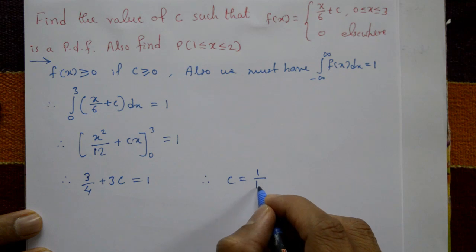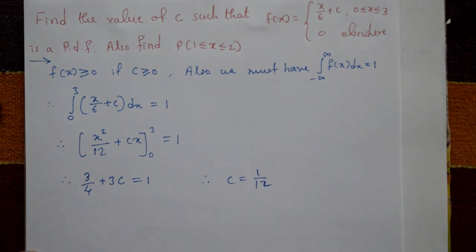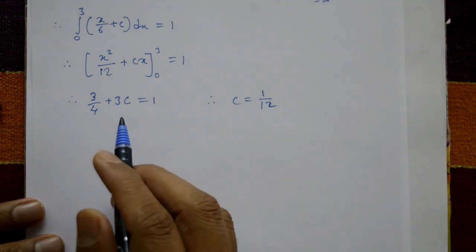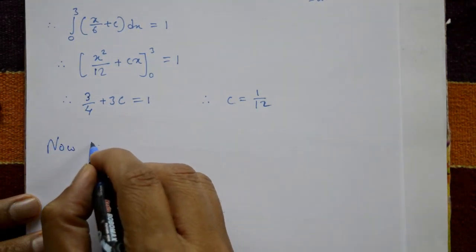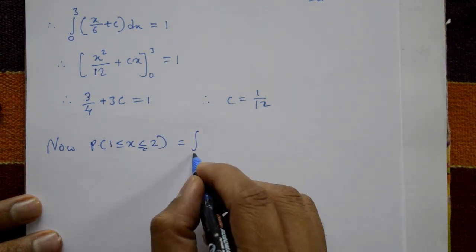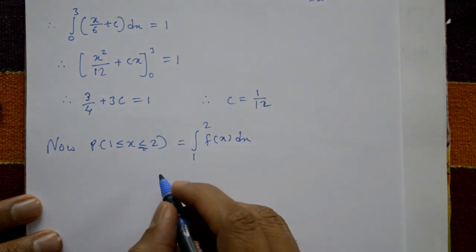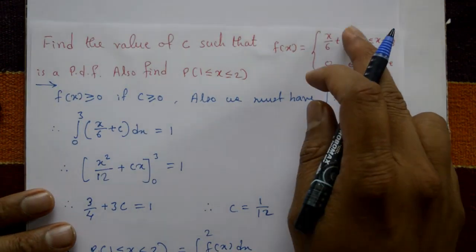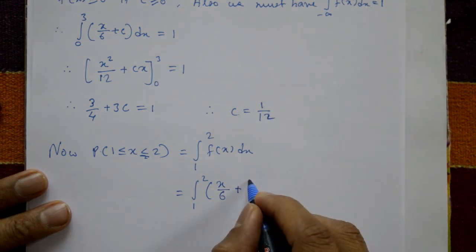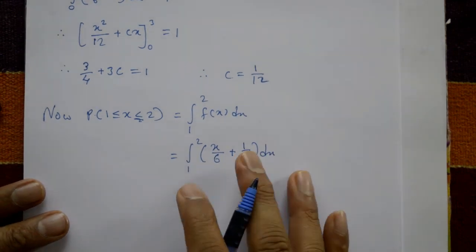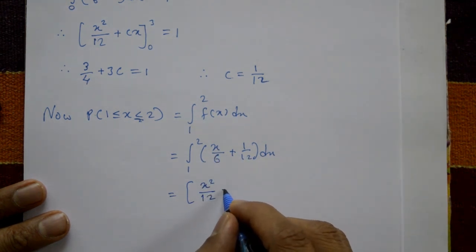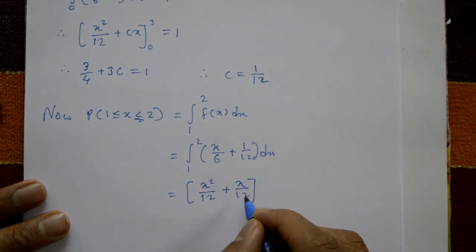Therefore c = 1/12. Now find P(1 ≤ x ≤ 2), which equals the integral from 1 to 2 of f(x) dx. The function f(x) = x/6 + c, with c = 1/12, so f(x) = x/6 + 1/12. Integrating: x²/12 + x/12, evaluated from 1 to 2.